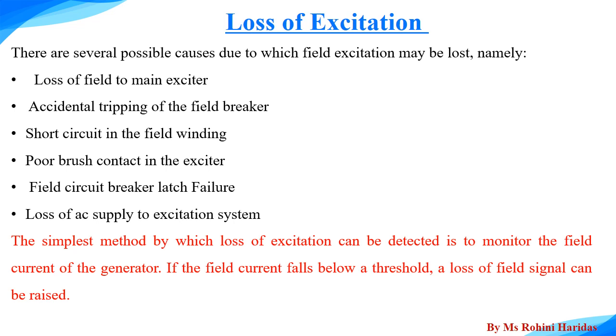The simplest method by which the loss of excitation can be detected is to monitor the field current of the generator. If the field current falls below the threshold, a loss of field signal can be raised.